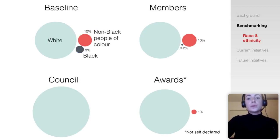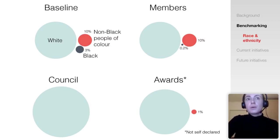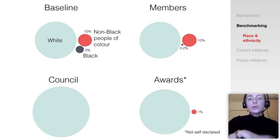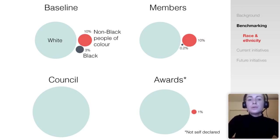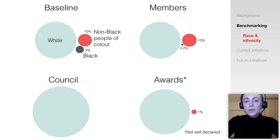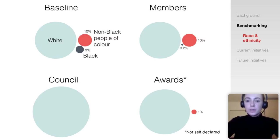We are doing worse when it comes to representing race and ethnicity. Using UK census data as a benchmark, non-black people of colour are relatively well represented among our members compared to UK census data, but this is not reflective of our global community. We are doing especially badly when it comes to the representation of black paleontologists: less than one percent of our members are black, and up to this year we've never had either a black council member or a black recipient of any of our major awards.